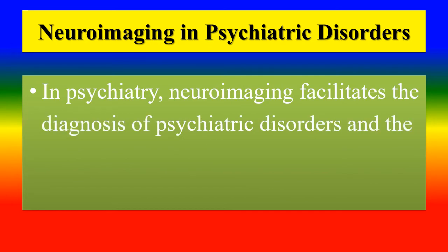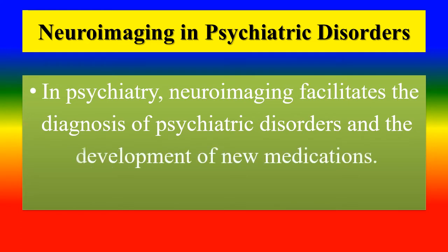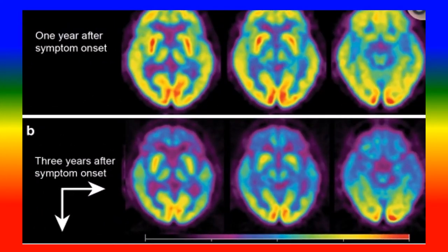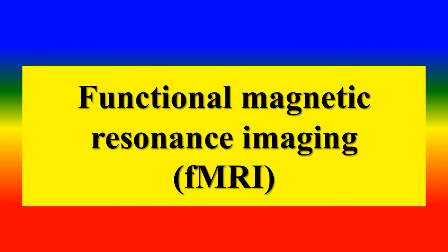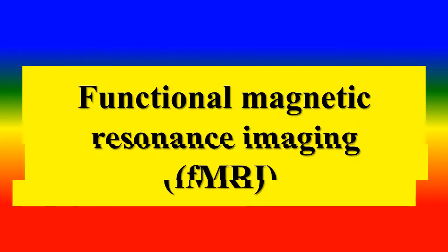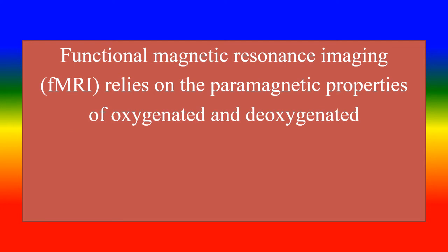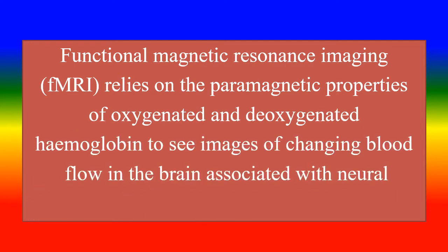In psychiatry, neuroimaging facilitates the diagnosis of psychiatric disorders and the development of new medications. Neuroimaging is also used in the differential diagnosis of neuropsychiatric syndromes, showing brain changes over time — for example, one year after symptom onset compared to three years after. Functional MRI relies on the paramagnetic properties of oxygenated and deoxygenated hemoglobin to see images of changing blood flow in the brain associated with neural activity.